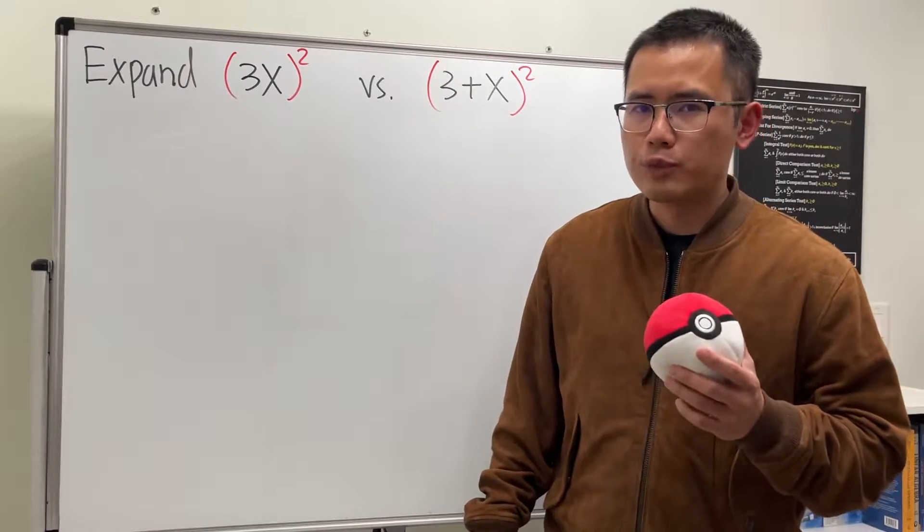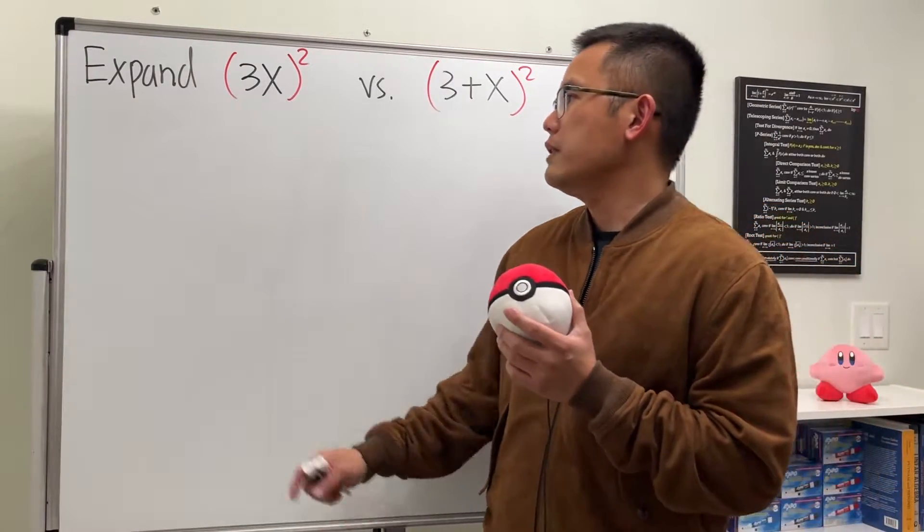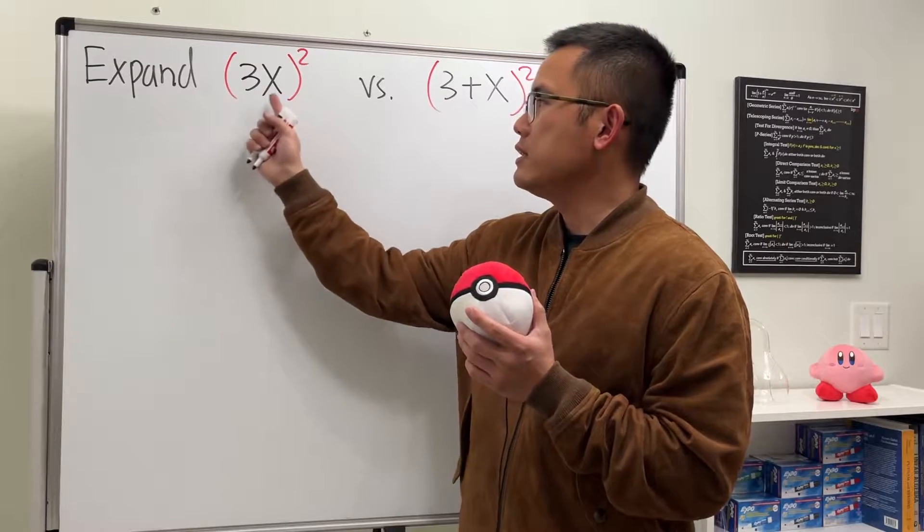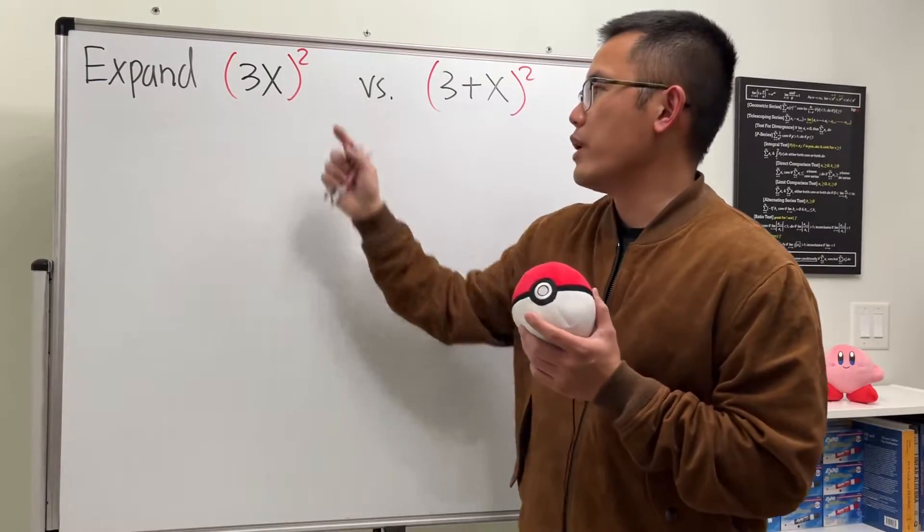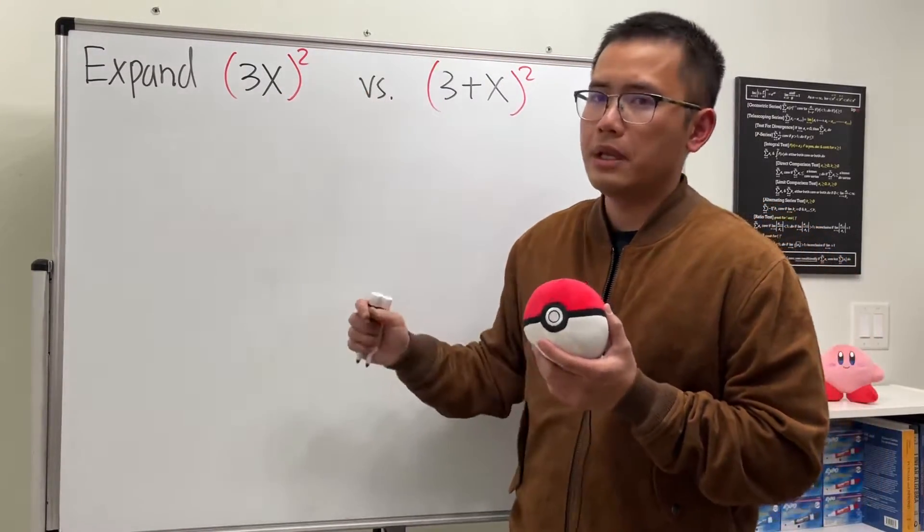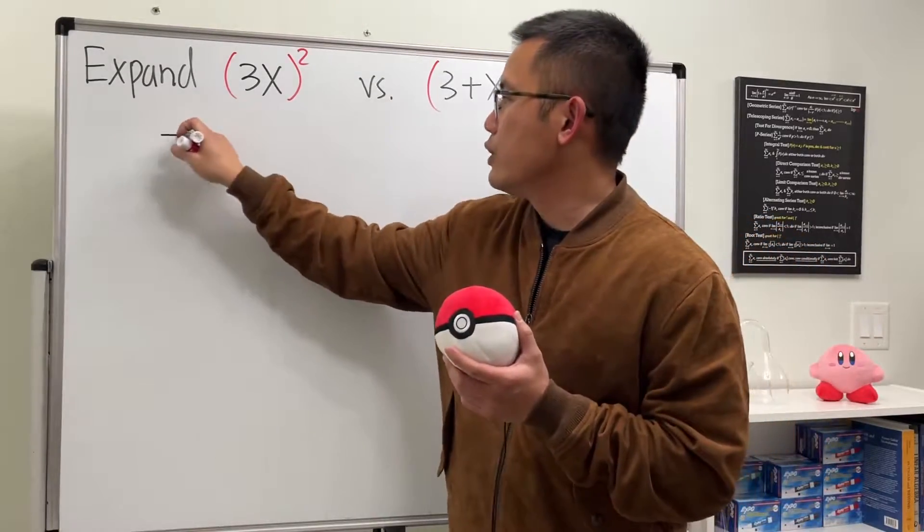This is a very common mistake for all algebra students. Check this out. First, let's see how we can expand parentheses with 3x inside and then square. Well, what does a square mean? This means we can just write this down twice and then multiply it.